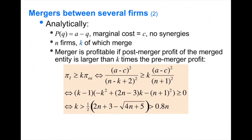Let's establish this analytically with a simple linear demand example: P(Q) = A − Q and linear costs, cost equal to c for all firms, with no synergies. Assume N Cournot competitors, and K of these N firms merge. The condition for this merger of K firms to be profitable is that the merged entity makes a larger profit than the sum of profits the K firms were making before the merger.